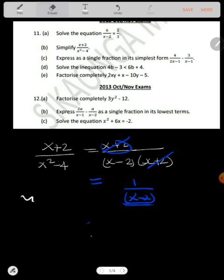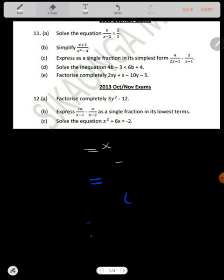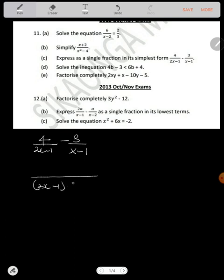Express as a single fraction in its simple form: 4 over 2x minus 1 minus 3 divided by x minus 1. So to express as a single fraction, you need to find the common denominator. In this case, these same two variables and coefficients would be our common denominator. And we repeat the same here.